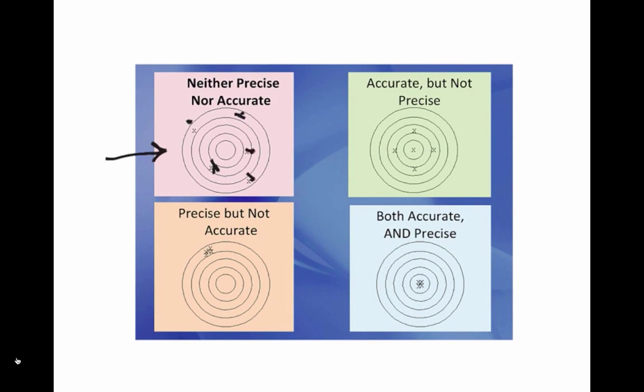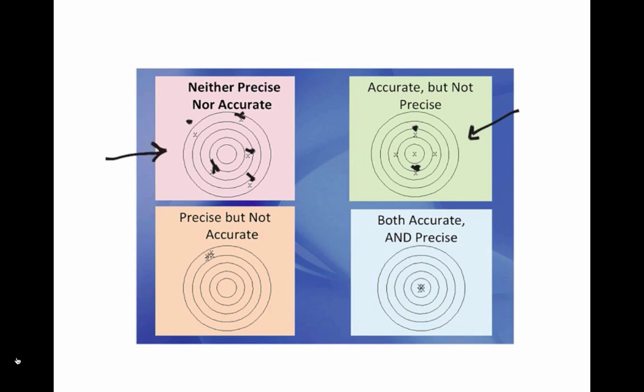In the green picture, you can see on average these measurements, like the top and bottom would kind of cancel each other out, and then the left and right would kind of cancel each other out. So on average, we're getting the right answer. However, we're not getting the right answer reliably, so this is not precise. Our measurements are not all the same.